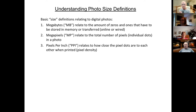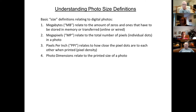Another measure of size is pixels per inch, which relates to how close the pixel dots are to each other when the photo is printed — it's pixel density. When you look closely at a newspaper and see individual dots, the pixel density there is very low. When you look at a photo that is very clear and sharp, the pixel density is very high. And finally, photo dimensions relate to the printed size of a photo — 16 by 20, 4 by 6. All four of these are different descriptions of size, but they all relate to the size of a photo.